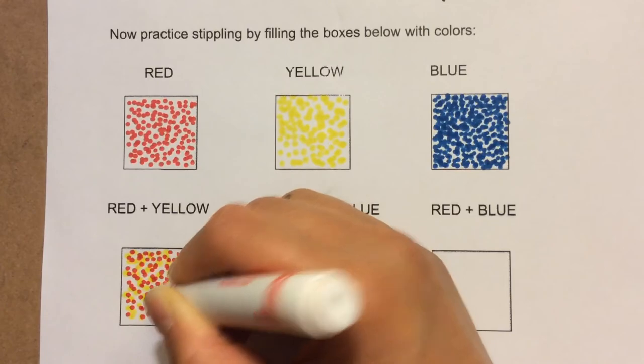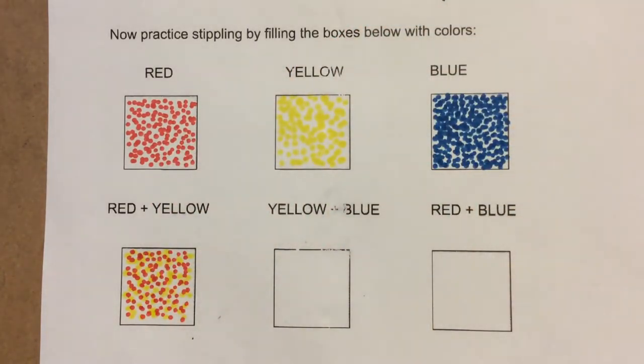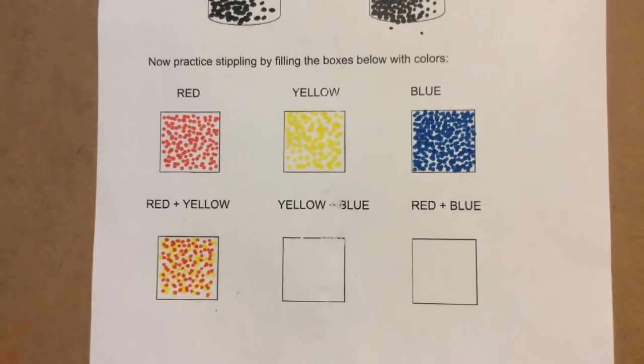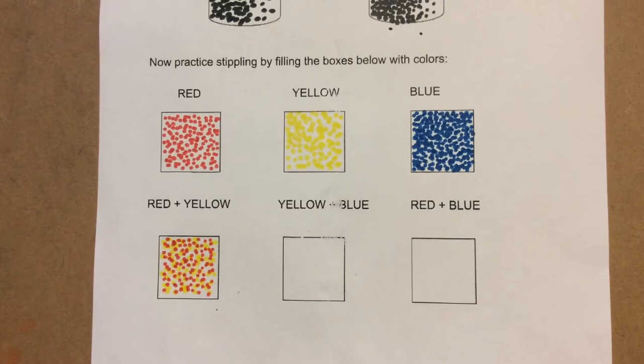Okay, so now when I take a step back, I have more dots so it not only looks darker, but now when I take a step back, it seems like I've got a brand new color.